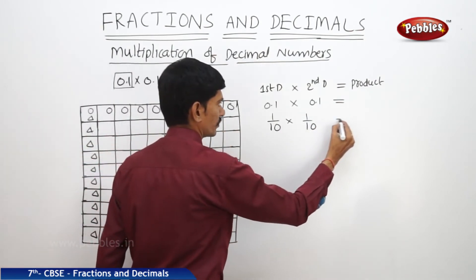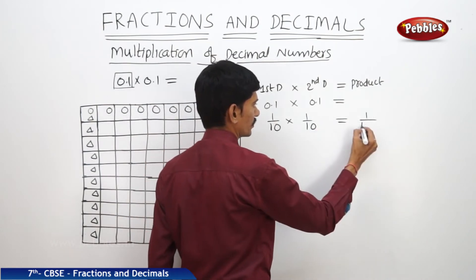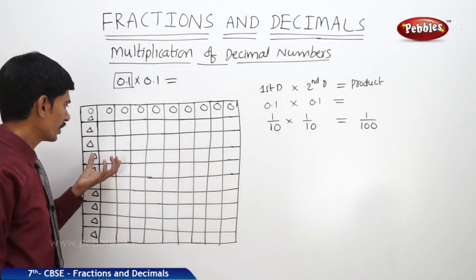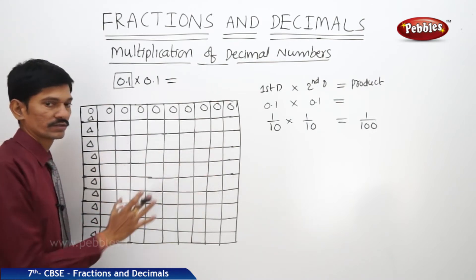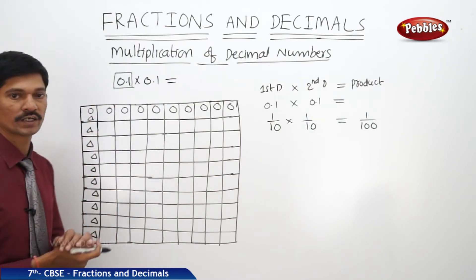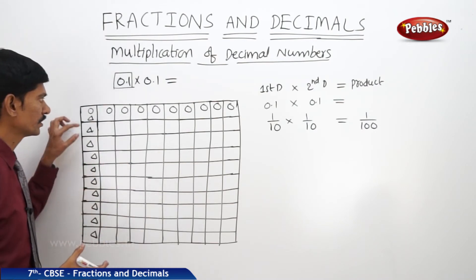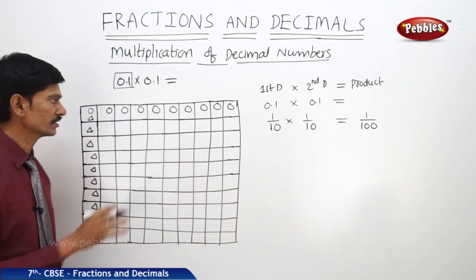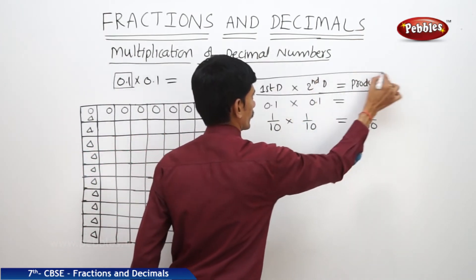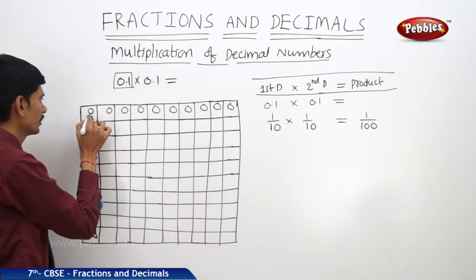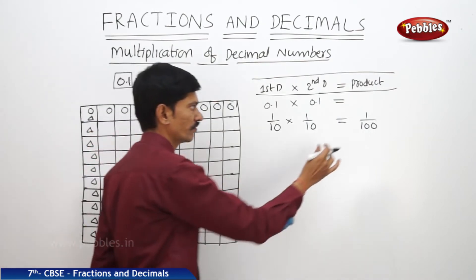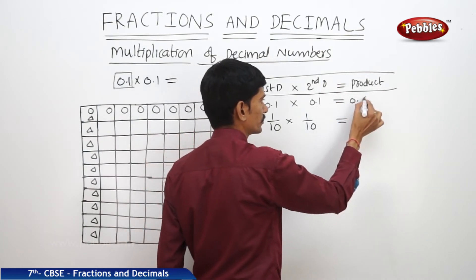Now, what is their product? We know that 1 times 1 is 1 and 10 times 10 is 100. Now, here also we will write the product in decimal form. There are 100 small squares — 10 tens are 100 squares. Out of 100 squares, the two shaded regions — both circle and triangle, meaning first decimal and second decimal — are in only one square out of 100. So this equals 1 by 100, which can be written as 0.01.